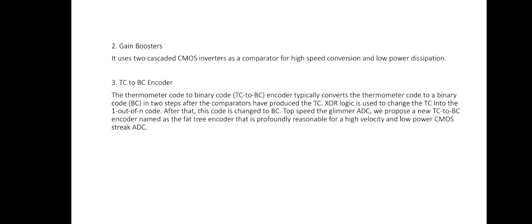The thermometer code to binary code encoder typically converts the thermometer code to binary code in two steps. After the comparators produce the thermometer code, XOR logic is used to change the TC into a one-out-of-N code, which is then converted to binary code. For the flash ADC, we propose a new TC-to-BC encoder — a fat tree encoder — which is responsible for high speed and low power consumption.